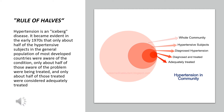The rule of halves applies to hypertension. Only about half of people who actually have hypertension are aware of their condition or are diagnosed. Among those diagnosed, only half are treated. And among those treated, only half are adequately treated. So in the whole community, among hypertensive subjects, awareness, diagnosis, treatment, and adequate treatment each represent roughly half of the previous group.